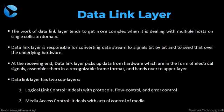At the receiving end, the data link layer picks up the data from hardware in the form of electrical signals, assembles them into a recognizable frame format, and hands it over to the upper layer. The data link layer has two sublayers: logical link control and media access control. Logical link control deals with protocol, flow control, and error control. Media access control deals with actual control of the media.